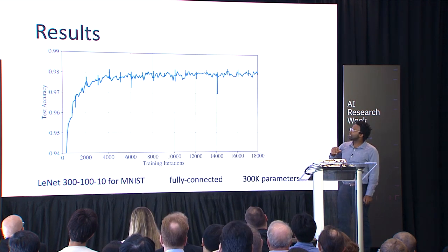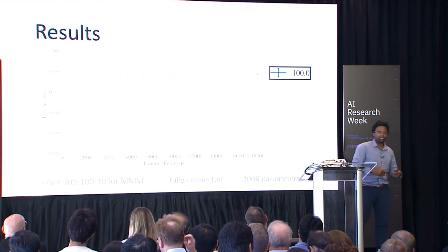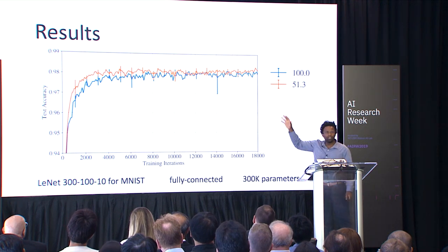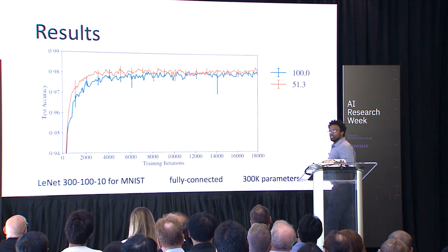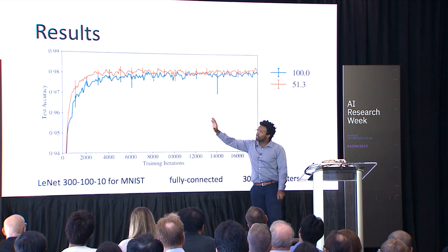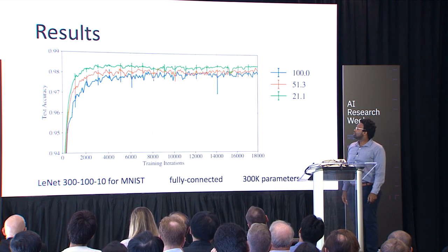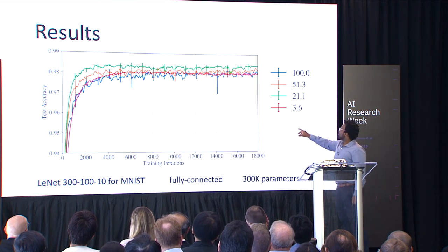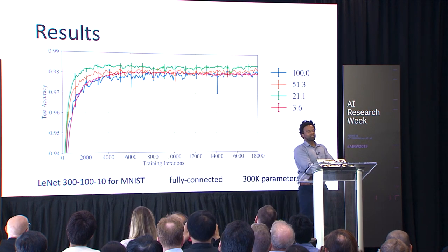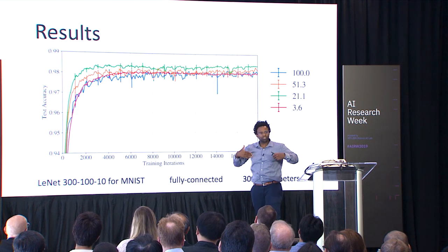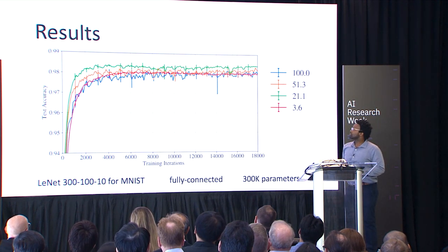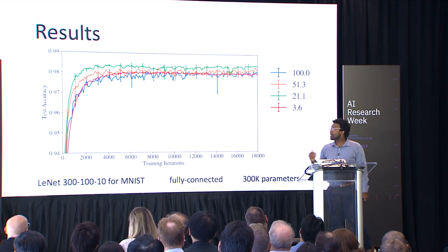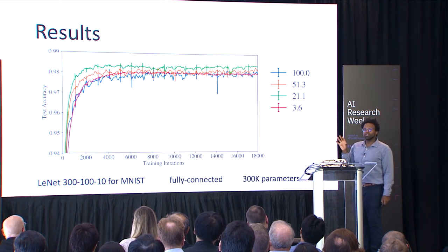For MNIST fully connected networks starting at 100%, I bring in curves for smaller and smaller networks. At 51% of weights remaining, this half-sized network trains to the same accuracy and slightly more quickly. Going down to 21.2%, we get a small accuracy boost and a speed boost. Below about 3.6%, things start to break down. But at 3.6%, we find a network that's 3.6% of the size of the original that trains just as well and just as quickly.